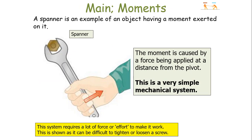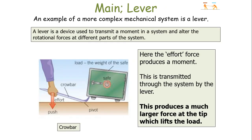A spanner is an example of an object having a moment exerted on it. The moment is caused by a force being applied at a distance from the pivot, like we mentioned previously. This is a very simple mechanical system — literally one person exerting a force at a particular distance from a pivot, causing a rotational effect. This system will require a lot of force, or as we say in mechanics, effort, to make it work. In the real world, it can be very difficult to tighten or loosen a screw on certain objects and devices, so humans soon devised ways to make this task a lot easier.